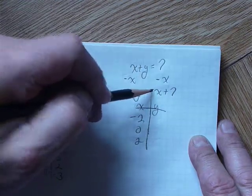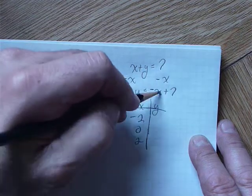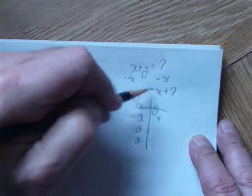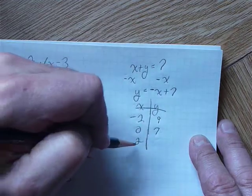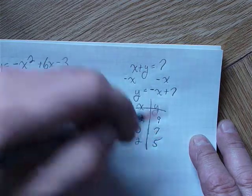So, if x is minus 2, minus a minus 2 is a positive 2. 2 plus 7 is 9. If x is 0, y is 7. And, if x is 2, minus 2 and a positive 7 is a positive 5.